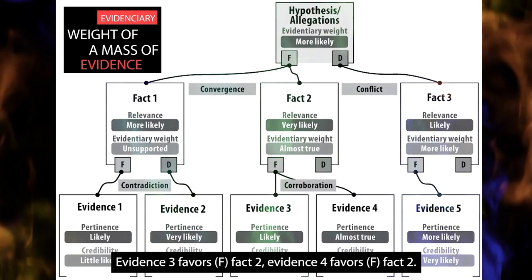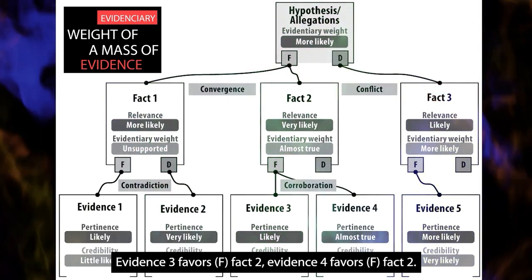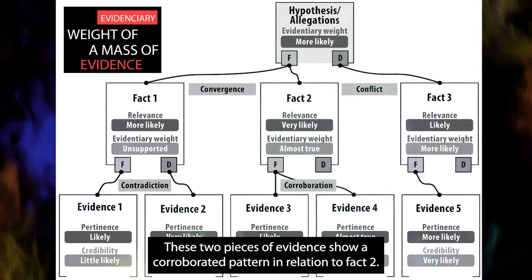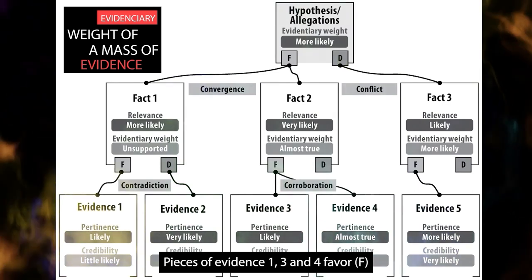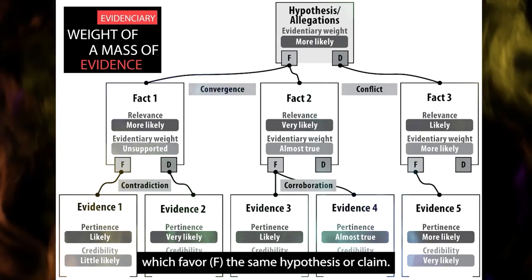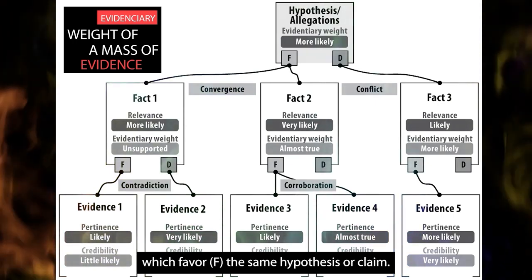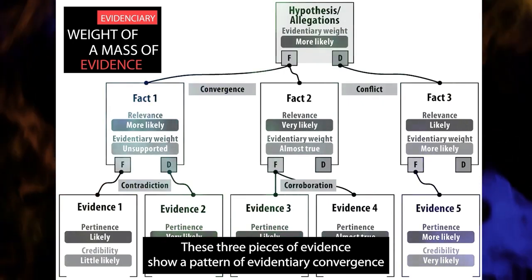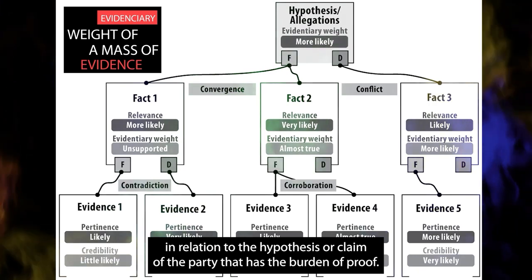Evidence 3 favors Fact 2. Evidence 4 favors Fact 2. These two pieces of evidence show a corroborative pattern in relation to Fact 2. Pieces of evidence 1, 3 and 4 favor different facts — Fact 1 and 2 respectively — which favor the same hypothesis or claim. These three pieces of evidence show a pattern of evidentiary convergence in relation to the hypothesis or claim of the party that has the burden of proof.